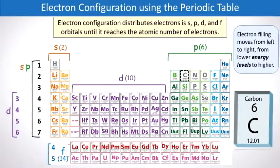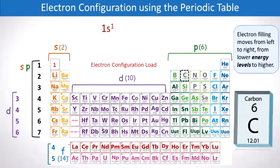So now that we've organized the periodic table, let's start to fill in the electrons according to the electron configuration. Electron filling moves from left to right, from lower energy levels to higher energy levels.